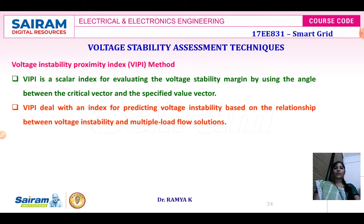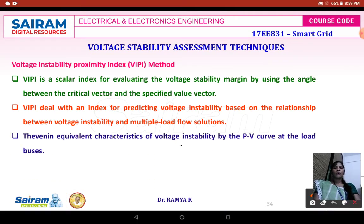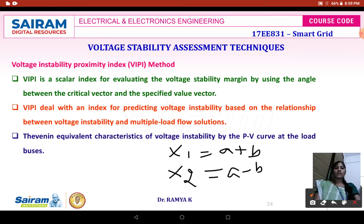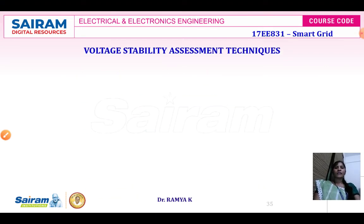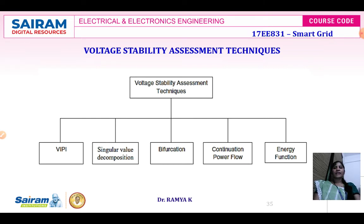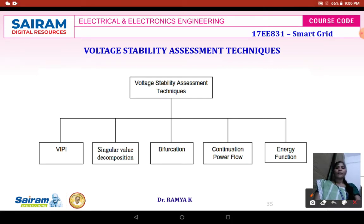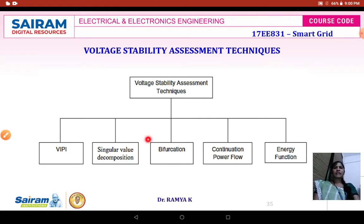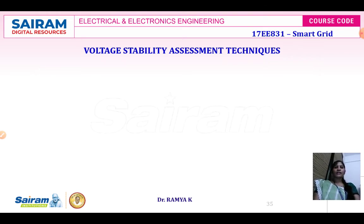When you consider the load flow equations, it has two variables: X1 = A + B and X2 = A - B. Solving both gives A = (X1 + X2) / 2. The different voltage stability assessment techniques available are: VIPI (Voltage Instability Proximity Index), singular value decomposition, bifurcation, continuation power flow, and energy function. Any one technique can be used.